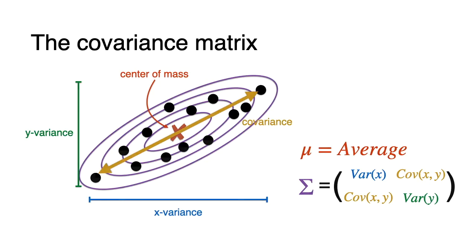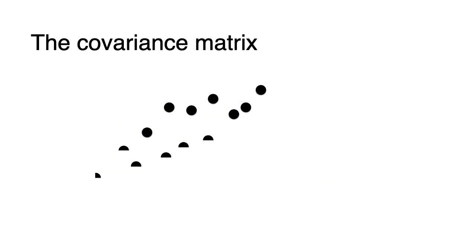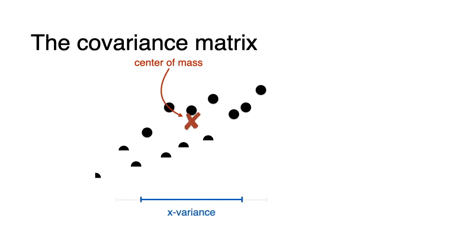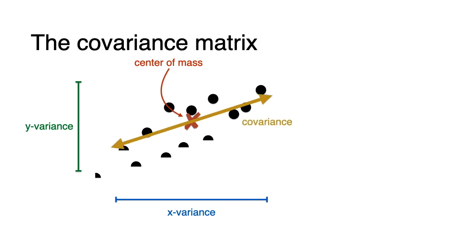In some cases, we're going to have points that are weighted. So we don't have the entire point in the dataset, but we have half of a point or a third of a point or a tenth of a point. We can still find the center of mass — this time it's going to be a little more up and to the right because the heavy points are up and to the right. We still have an x-variance, a y-variance, and a covariance. This is useful in algorithms like Gaussian mixture models, for example.